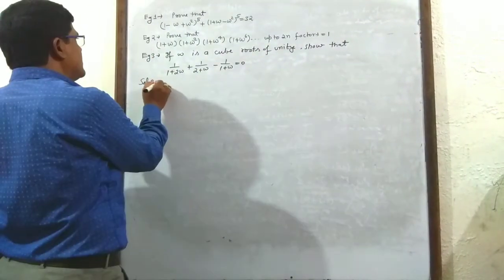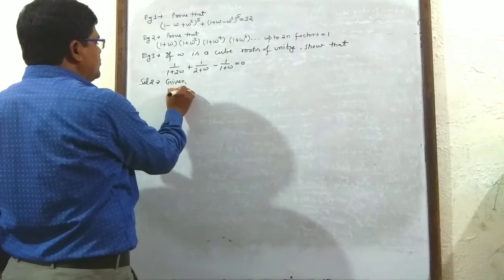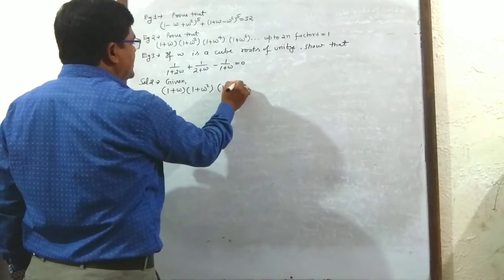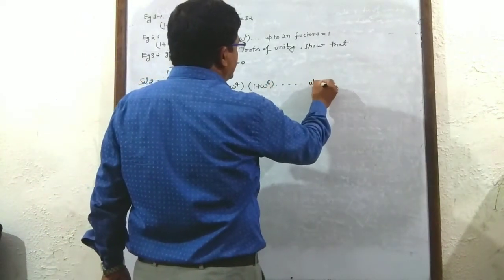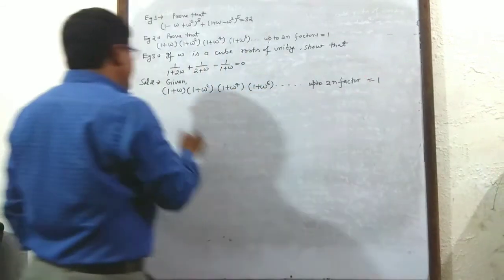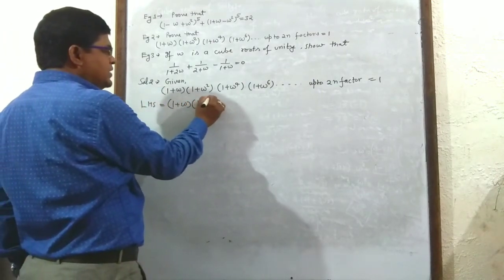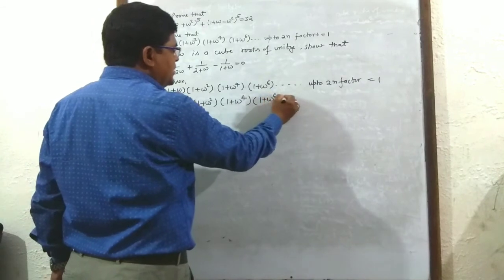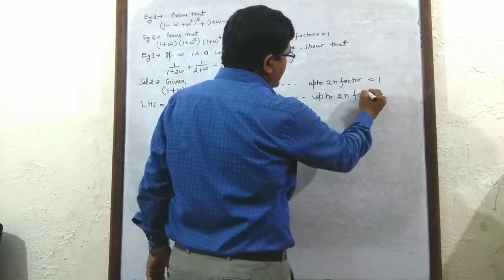Example 2: Given (1 + ω)(1 + ω²)(1 + ω⁴)(1 + ω⁶)... up to 2n factors = 1. Taking left hand side: note that ω⁴ = ω³·ω, and since ω³ = 1, ω⁴ = ω. Similarly ω⁶ = (ω³)² = 1, so (1 + ω⁶) = 1 + 1... the pattern reduces each factor.